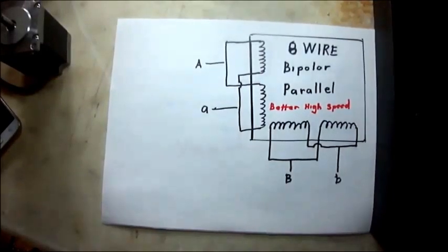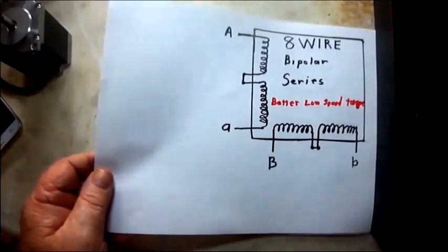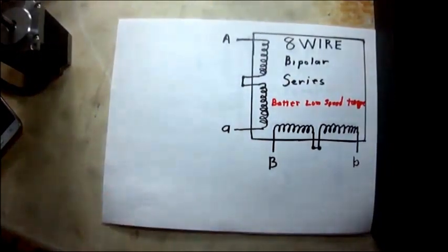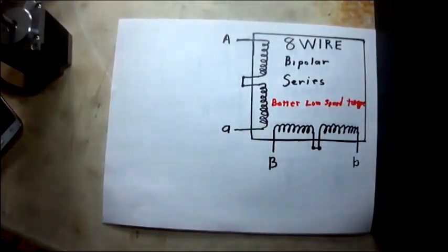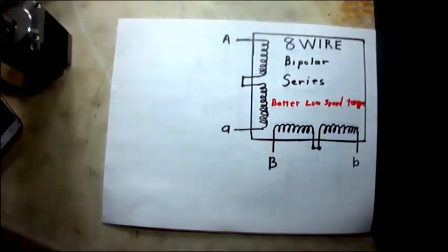Now if you need more torque on the low end, you can wire them in series. As you see, there's no connection except to each other on the center tabs. And that will give you better low end.